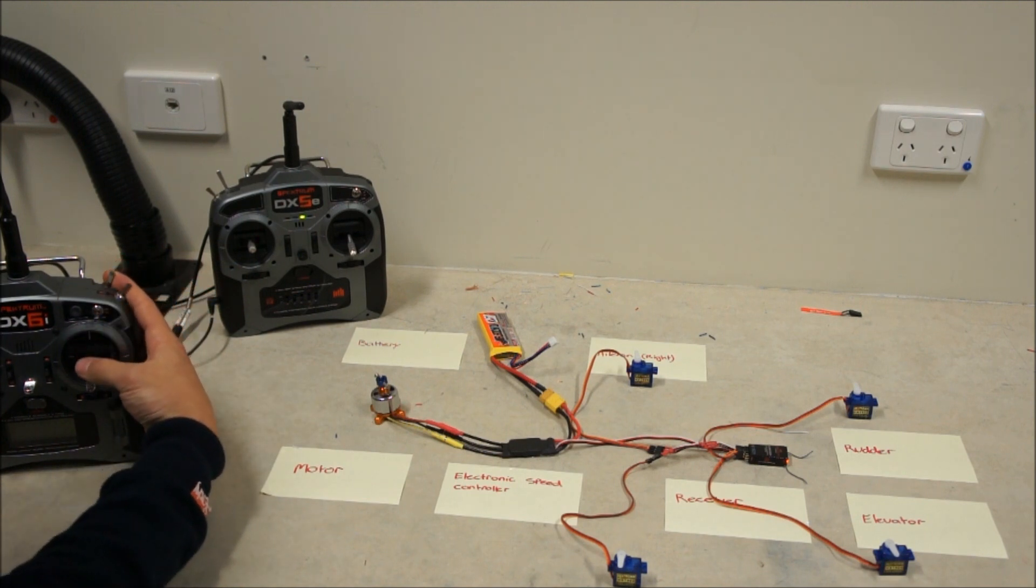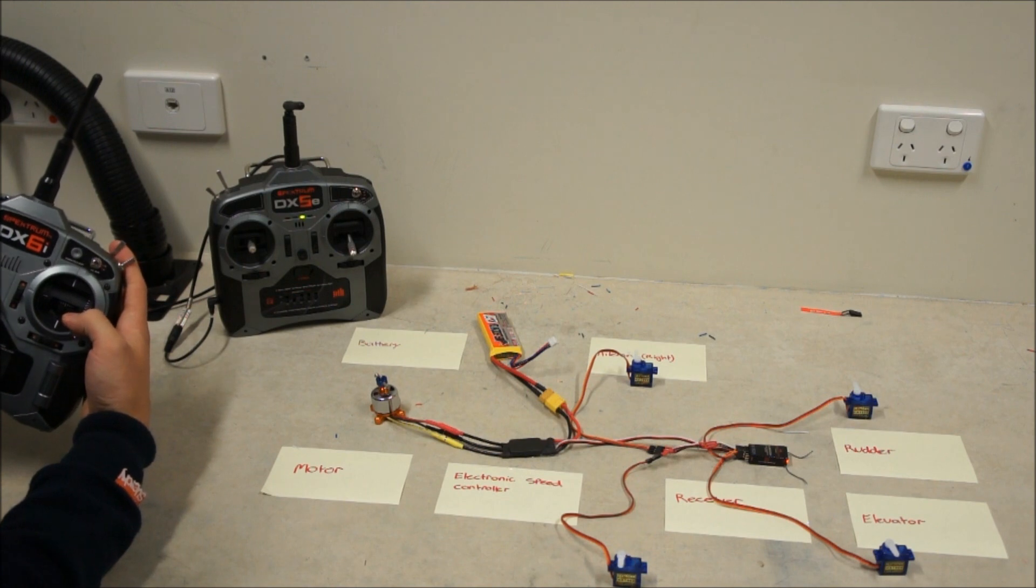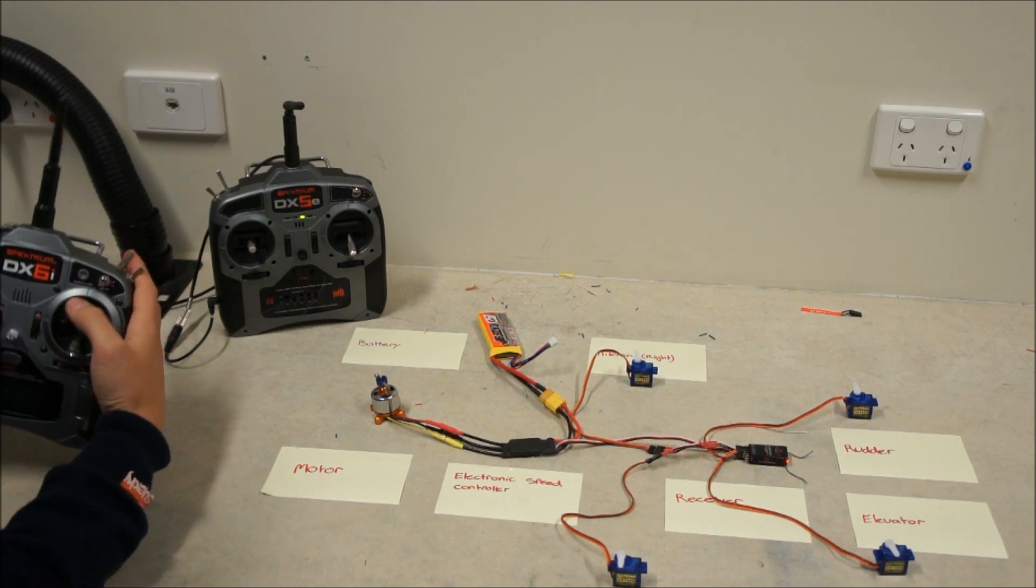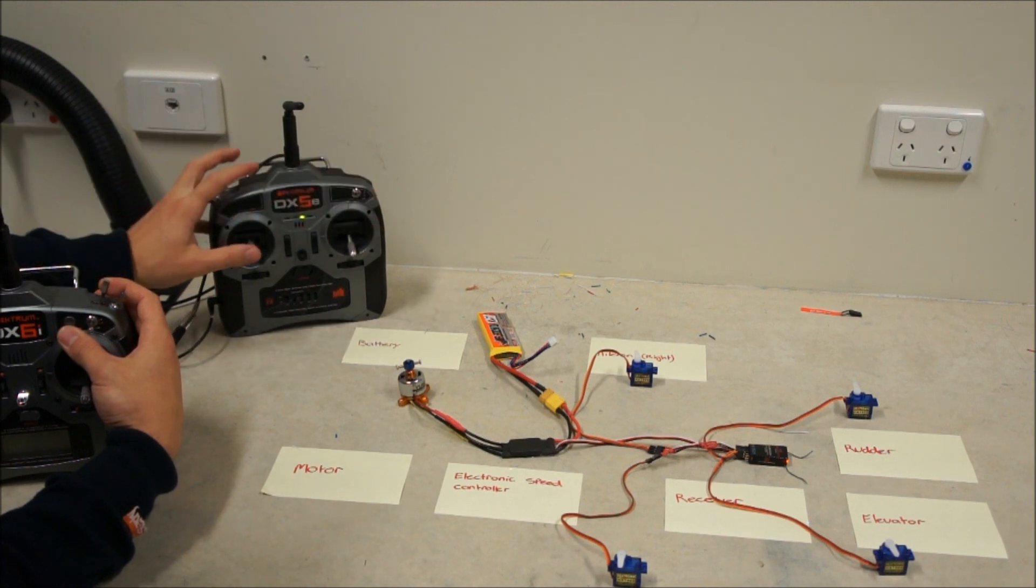So now if I hold down my trainer switch I don't have any control on this. So when I hold it down I've got nothing, but if I let it go I can control it. But if I do hold it down again, with the second person they've got control of the ailerons, throttle and elevator and rudder.